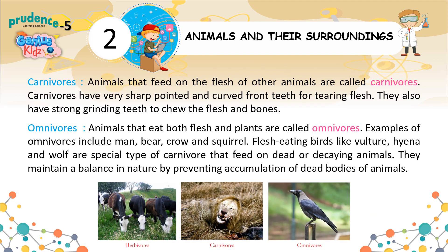Carnivores. Animals that feed on the flesh of other animals are called carnivores. Carnivores have very sharp, pointed, and curved front teeth for tearing flesh. They also have strong grinding teeth to chew the flesh and bones. Omnivores: animals that eat both flesh and plants are called omnivores. Examples include man, bear, crow, and squirrel. Flesh-eating birds like vulture, hyena, and wolf are a special type of carnivore that feeds on dead or decaying animals.